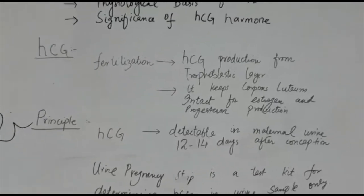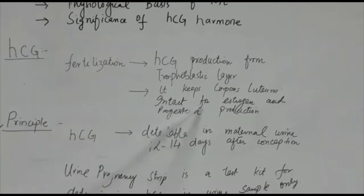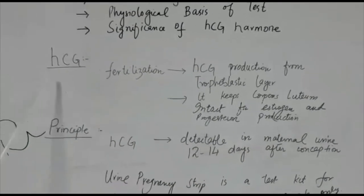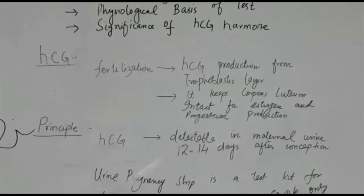Afterwards, when the placenta has developed and starts to produce estrogen and progesterone, the concentration of HCG in the blood of mother starts to decrease.